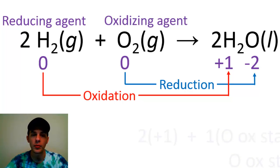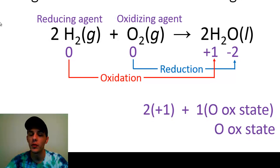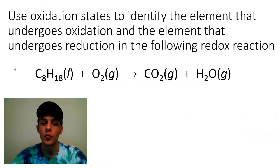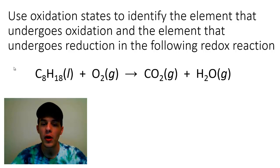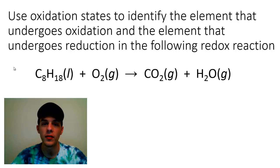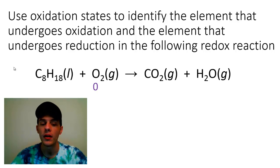That example was pretty easy. Let's move on to one that's a little bit more difficult. Same directions — we're going to figure out what's being oxidized and what's being reduced using oxidation states. We have the combustion of octane: C₈H₁₈ burning in pure oxygen, with products CO₂ and water. One reactant is very easy — the oxygen. Because it's a free element, oxygen as it exists in pure O₂ is going to have an oxidation state of zero.